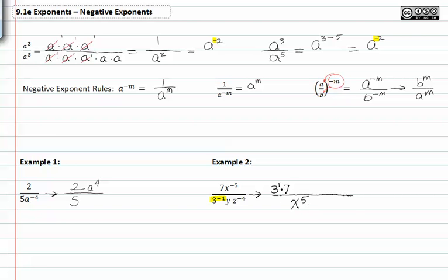With y, it stays in the denominator because it had a positive one for its exponent. And finally, z has a negative four exponent and so we'll shift it up across the fraction bar and make it a positive four z.